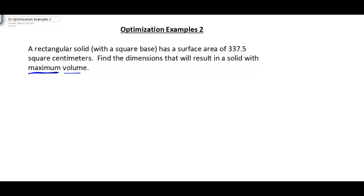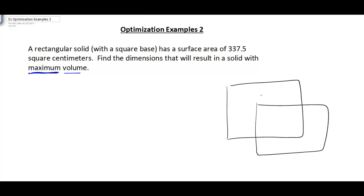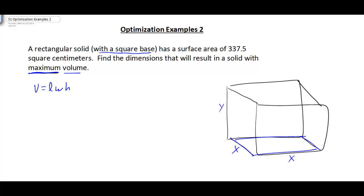We have a rectangular solid, so we're looking at some type of box shape, and we want to maximize its volume. The key word is that we have a square base, which tells us the length and the width are the same — we can label both as X. Then we label the height as Y. So we have a square base of side X and a height of Y.